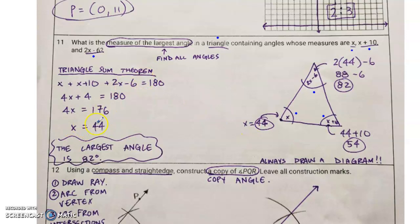x is equal to 44, but that's not the answer. It says the measure of the largest angle, so I substitute x into all of these, and I get the largest angle being 82. Always draw a diagram.